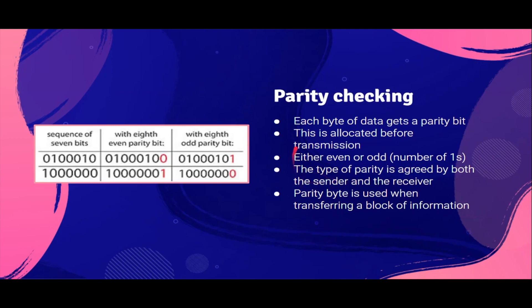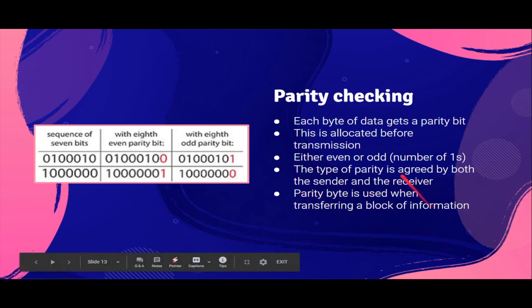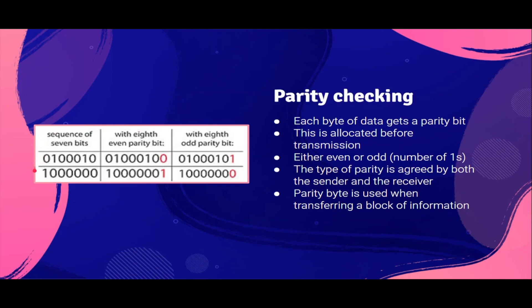Whether it's even or odd is decided by both the sender and receiver. A parity byte is used when transferring a block of information. For example, take the seven bits: 0 1 0 0 0 1 0. In this, there are two ones. So if it's following even parity, it already has an even number of ones, so we don't need another one — we add zero. But if it is following odd parity, we need to add another one to make it an odd number. That's basically parity checking.